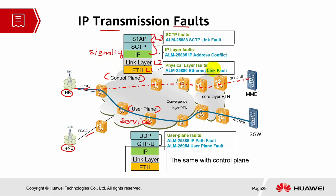The alarms generated from these layers include physical layer fault at Layer 1, IP address conflict at Layer 2 or 3, and SCTP fault. All of these are related to the protocol stack alarms and are signaling-related.